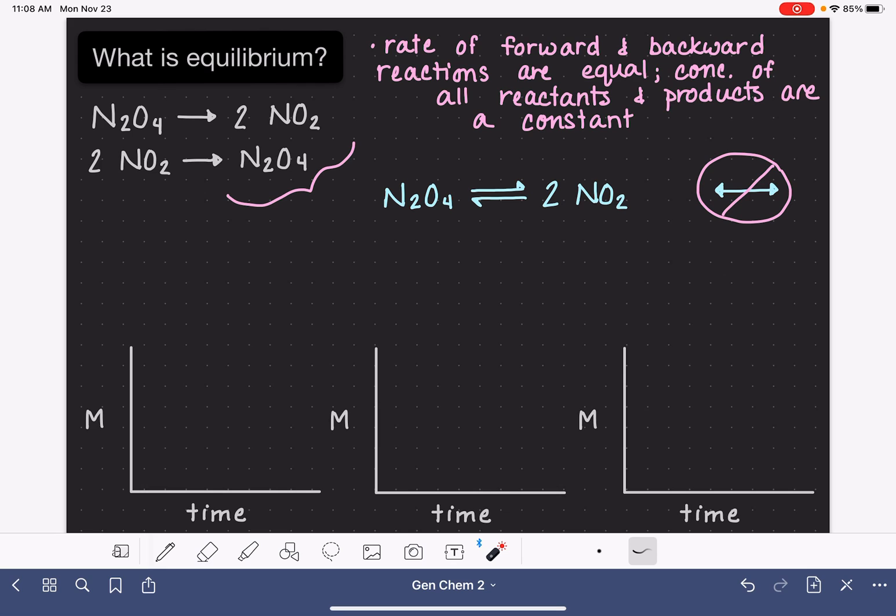Now, one of the really interesting things about systems in equilibrium is that it kind of doesn't matter where the system starts. It's always going to get itself to this point where the rate of the forward and the backward reactions are equal and the concentration is unchanging. So down here, we're going to imagine a few different scenarios for this particular system right here and take a look at how that might work graphically.